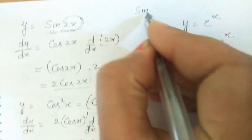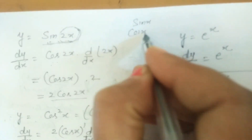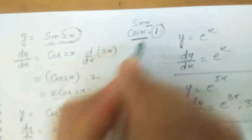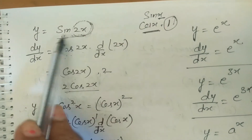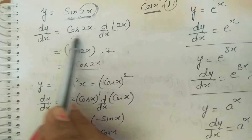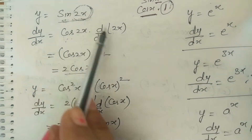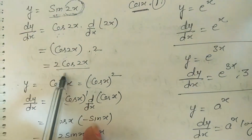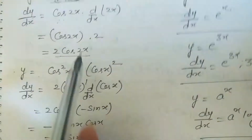To clarify: for sin x, the derivative is cos x · (x derivative = 1), so we just write cos x. But for sin 2x, we get cos 2x · 2 = 2 cos 2x.